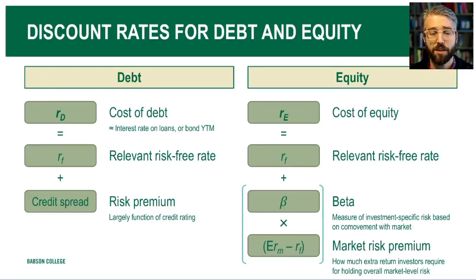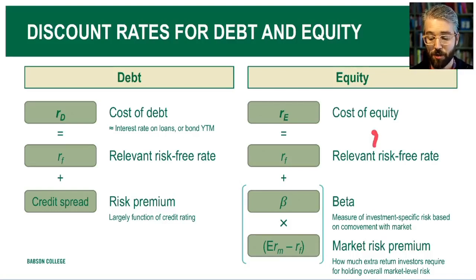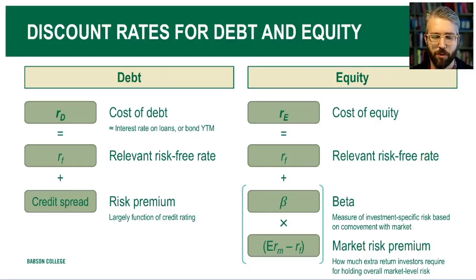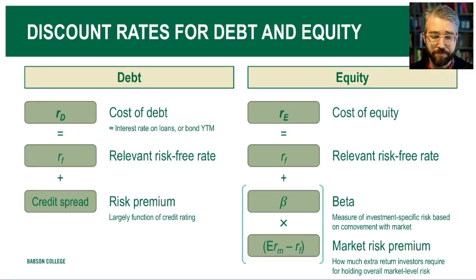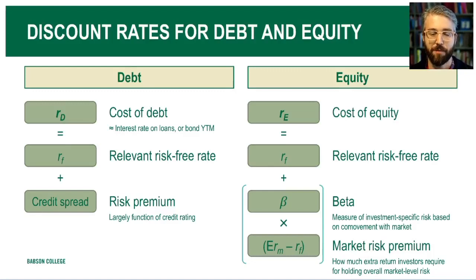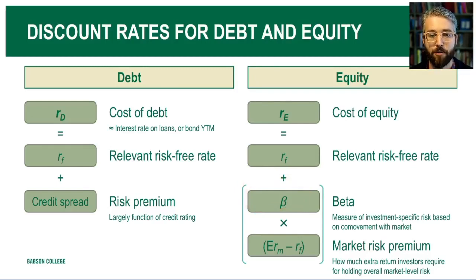On the equity side, we're going to describe the relevant cost of equity as starting with a relevant risk-free benchmark associated with the duration of the equity investment — though that's a bit subtler, since unlike a five-year or ten-year bond, it's not always clear how to think about the lifetime of an equity investment. To that, we add a risk premium, where the key model we're going to use to describe equity risk premiums is called the Capital Asset Pricing Model, or CAPM. That risk premium is estimated as the product of two things: one is beta, a measure of investment-specific risk based on the co-movement of a given stock with the market as a whole, measured using linear regression.